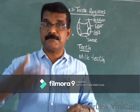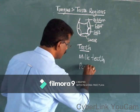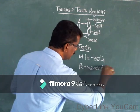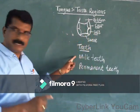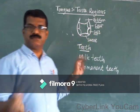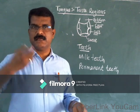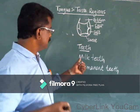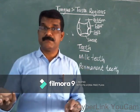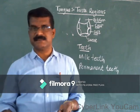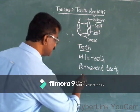When milk teeth fall, permanent teeth develop in their place. So there are two types of teeth: milk teeth and permanent teeth. Milk teeth appear after about eight months to one year after birth, and after three to four years they fall and permanent teeth develop.